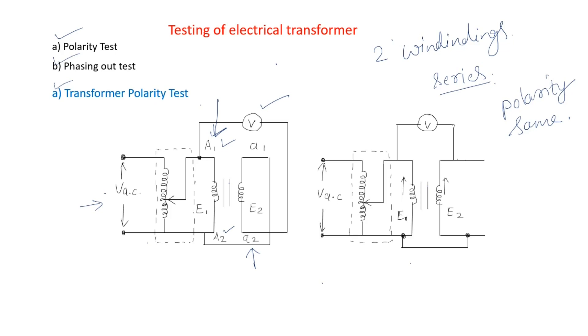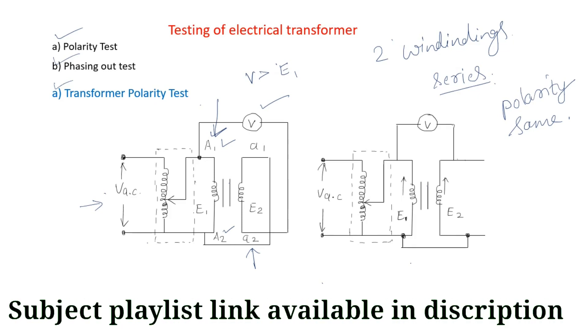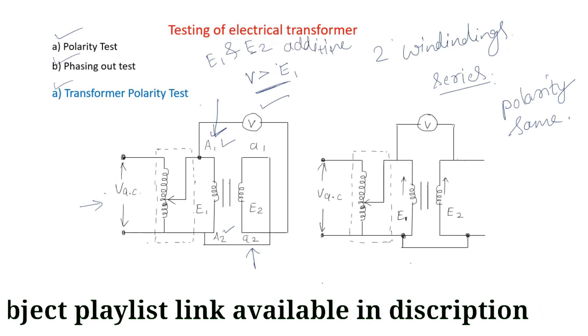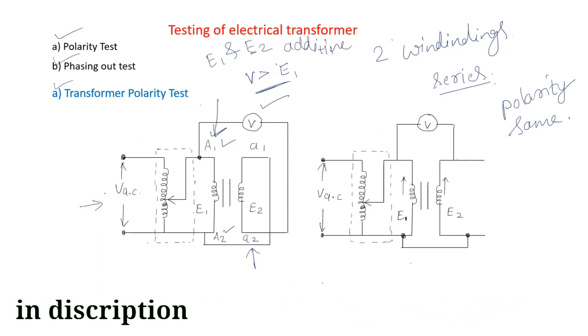The voltage across A1 and a2 is measured by voltmeter V. If V is greater than E1, it clearly indicates that both the EMF induced in A1 and a2 are additive, so assumed polarities are correct. This is what we have assumed - the polarity we assumed is correct.